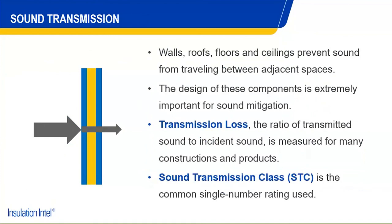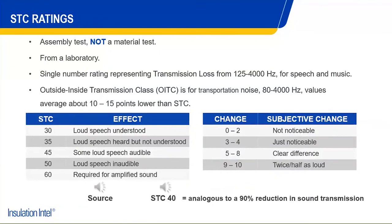Looking at how we can use materials along the path to mitigate sound transmission: walls, roofs, floors, and ceilings all prevent sound from traveling between adjacent spaces. The makeup and materials used in those assemblies can make a huge difference in how effective they are at creating transmission loss — the ratio of transmitted sound to incident sound. We measure transmission loss across the frequency range of 125 to 4,000 Hz, average all those together, and get a single number rating: the Sound Transmission Class, or STC. The higher the STC, the better.